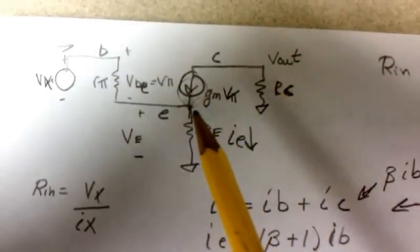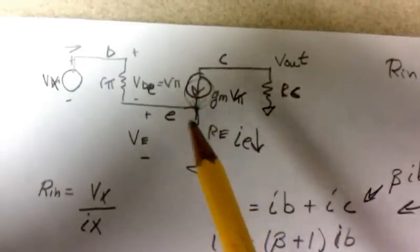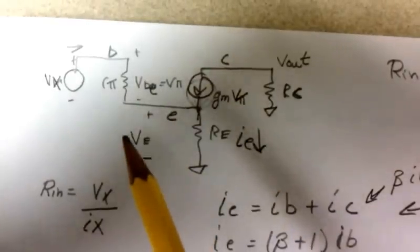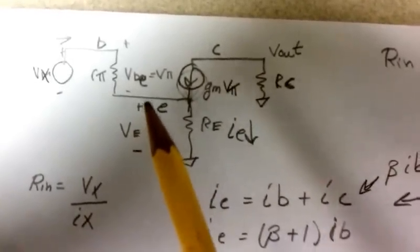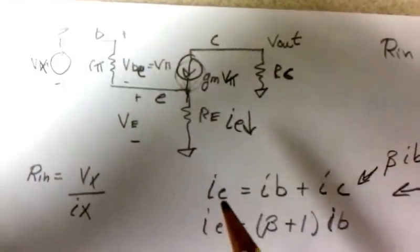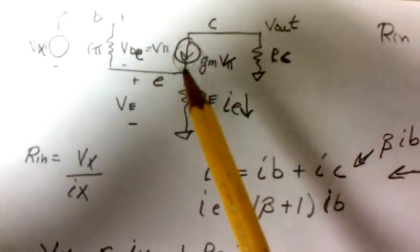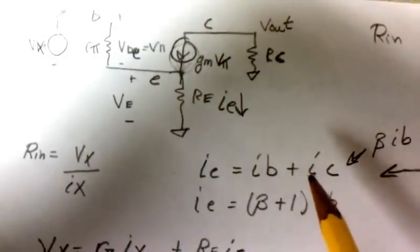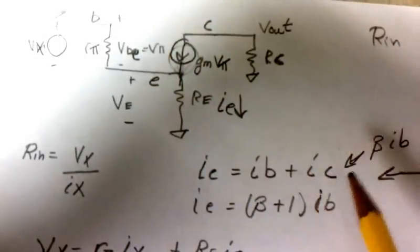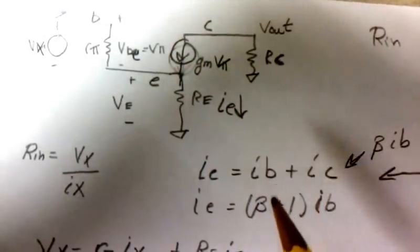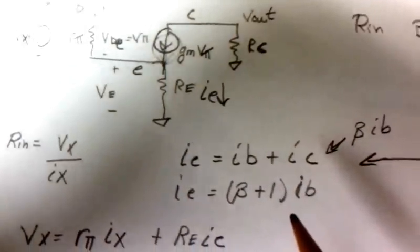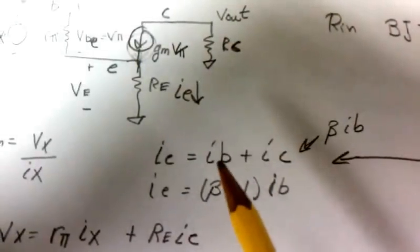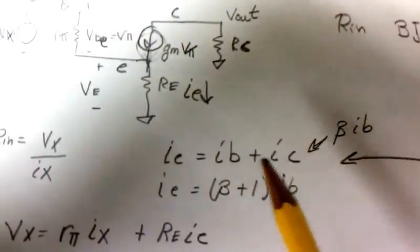There is a current coming through here controlled by this voltage here, so we have to modify things. We have one equation: ie is going to equal IC, which is GM*Vpi or beta*IB, plus IB. So ie is the sum of these two currents.